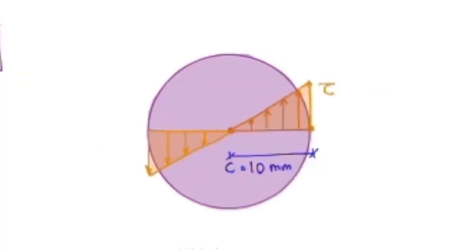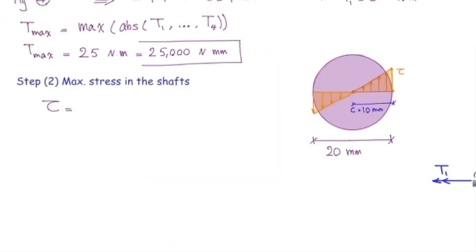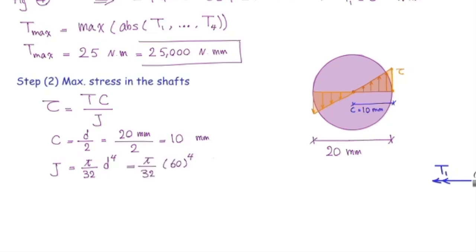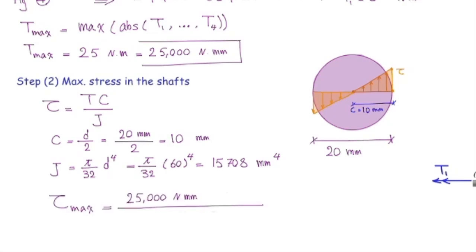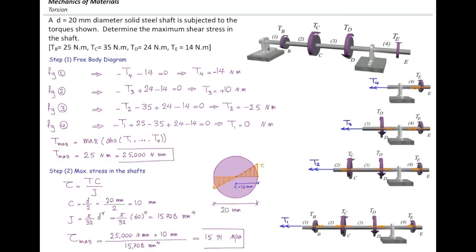The maximum shear stress occurs on the outer surface of the shaft. Using Tc over J: C is half the diameter, so C equals 10 mm, and J is pi over 32 times diameter to the fourth. Plugging in the values — torque multiplied by C divided by J — we get a maximum shear stress of 15.91 MPa. The important part of this problem is using the free body diagram properly; the rest is simply plugging values into the stress equation.